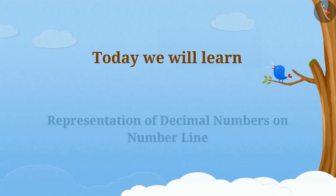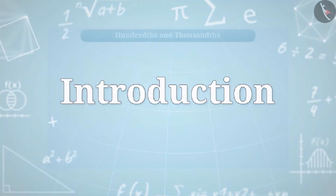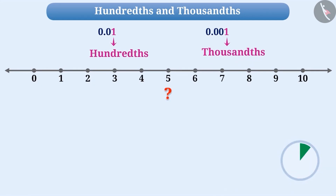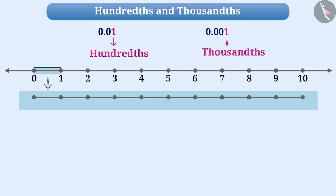Today, we will learn representation of decimal numbers on the number line. Can we represent numbers with hundredths and thousandths places on a number line? Yes, we can. Numbers from zero to ten are represented on this number line. If we zoom in, we can divide the distance between zero and one into ten equal parts and represent numbers like 0.1, 0.2, 0.3, etc.